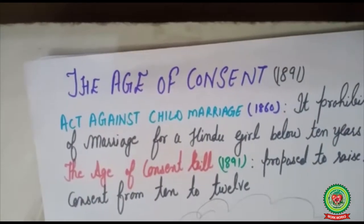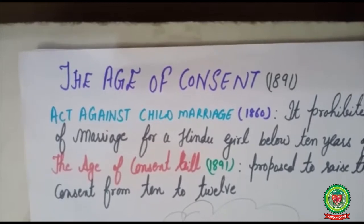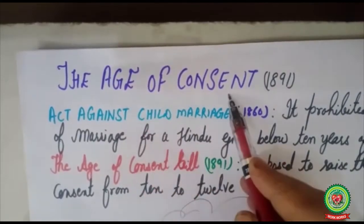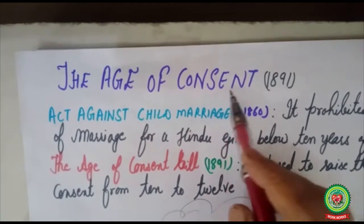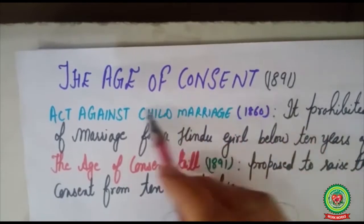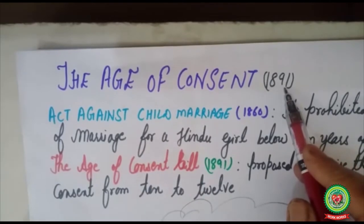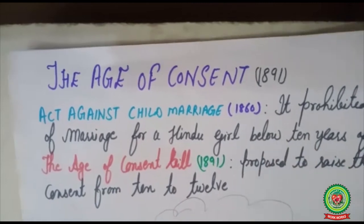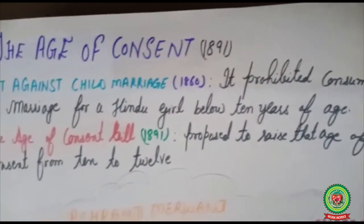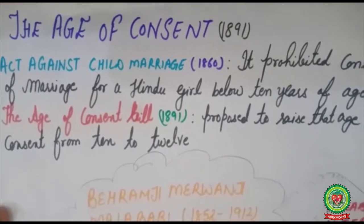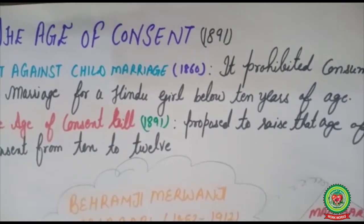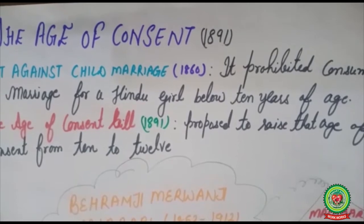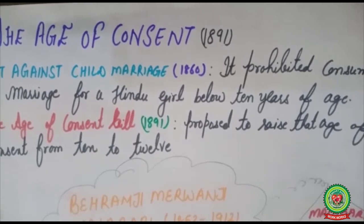Apart from female infanticide, another main issue was: what should be the age of consent — the age of marriage for girls in India? The first act against child marriage was passed in 1860, which prohibited the consummation of marriage of a Hindu girl below 10 years of age. So according to that first act, the minimum age of girls to be married in India was 10 years.